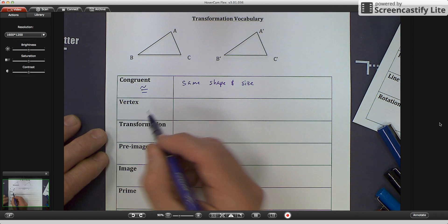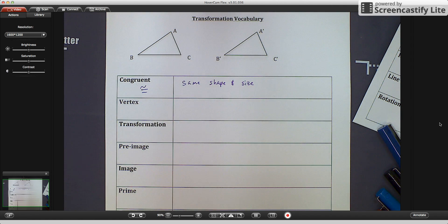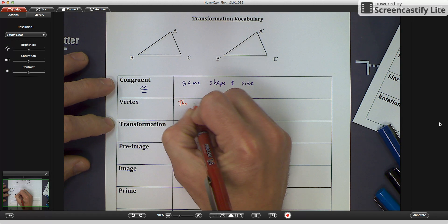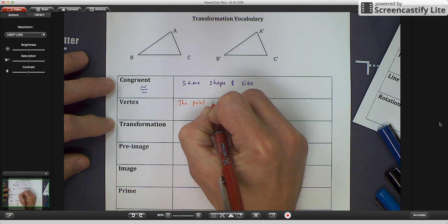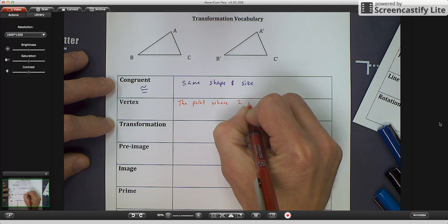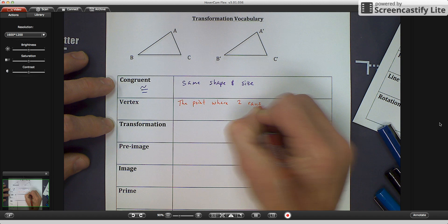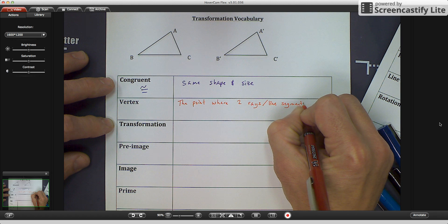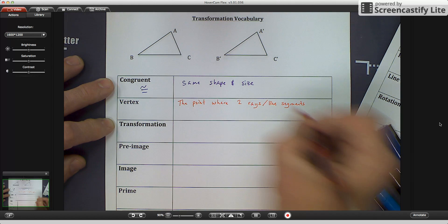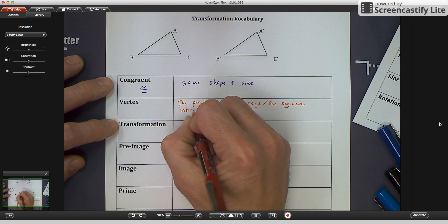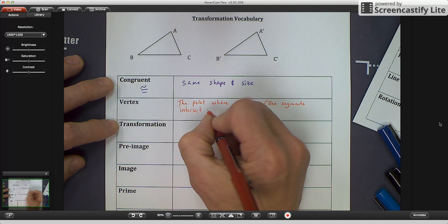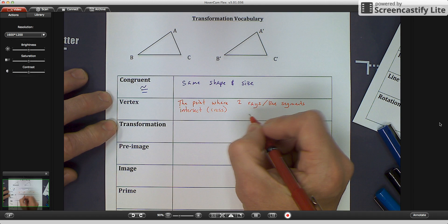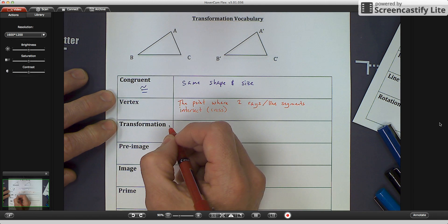For the word vertex, this is a new definition, and the definition for the word vertex is the point where two rays or line segments intersect. Another word for intersect, cross.